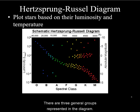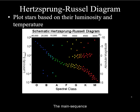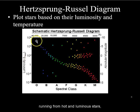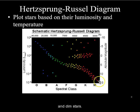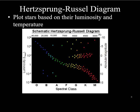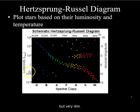There are three general groups represented in the diagram. The main sequence is a continuous band running from hot and luminous stars all the way to cool and dim stars. Red giants are cool but very luminous. White dwarves are hot but very dim.